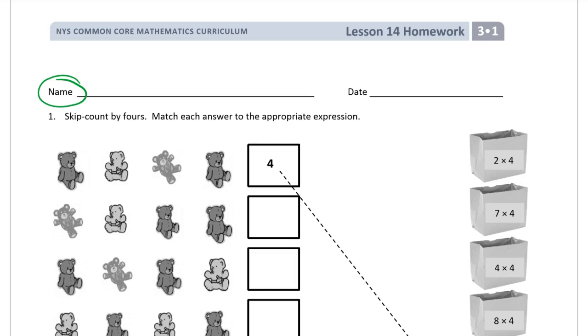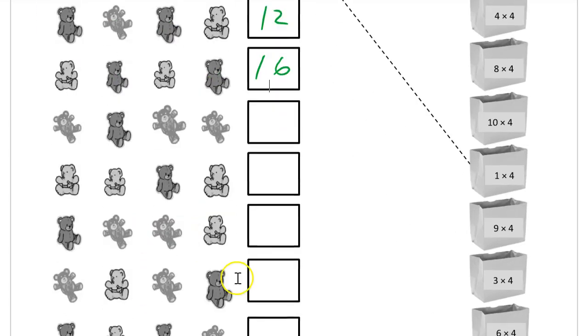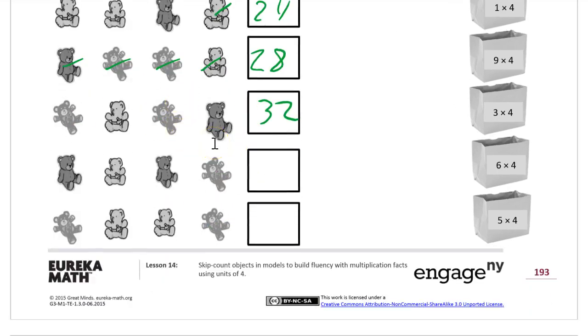So we're skip counting by fours. That's four, and if you just count the bears we've got one, two, three, four, five, six, seven, eight. So we get eight. Now we count four more up from eight we're going to have 12, and four more from that we're going to have 16, and then four more from that is going to be 20, 21, 22, 23, 24, 25, 26, 27, 28, and after 28 four more is 32, and after 32 we get 36, and then we're all the way to 40.